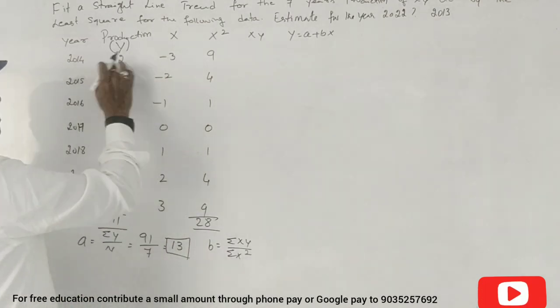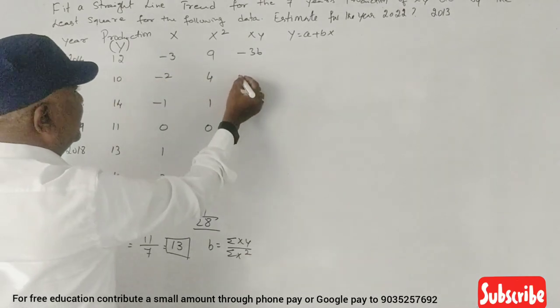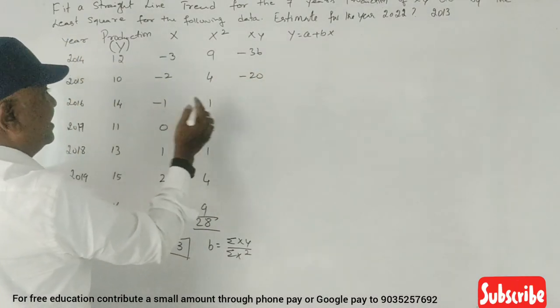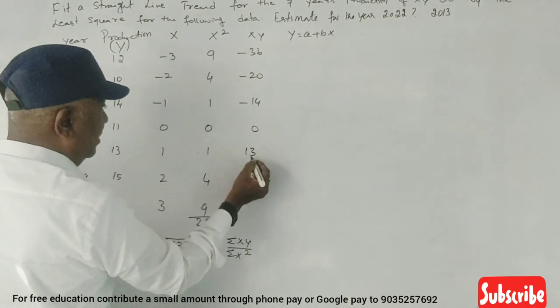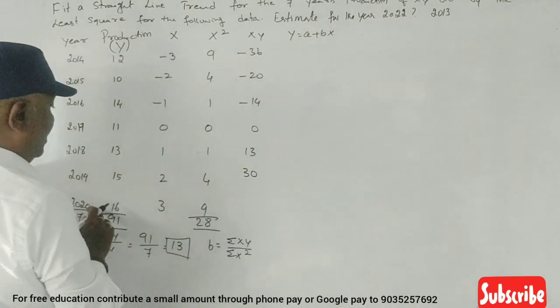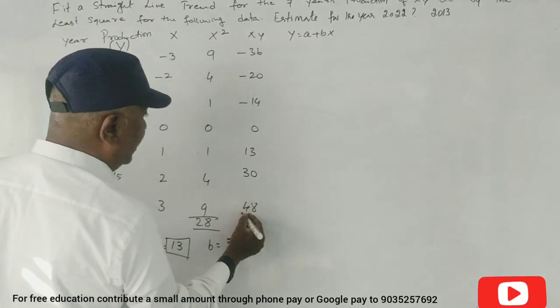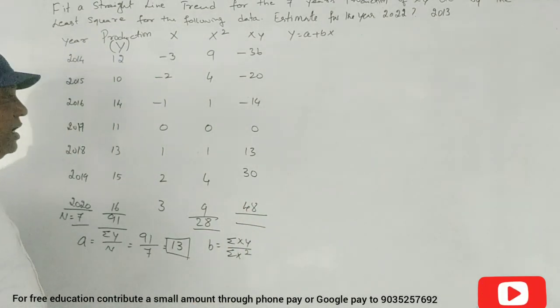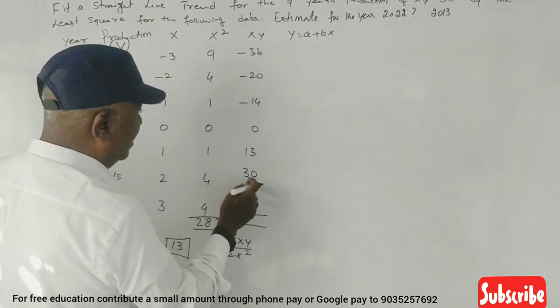X into Y: minus 36, minus 20, minus 14, 0, 13, 16. Total is 11.